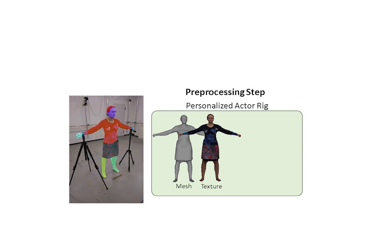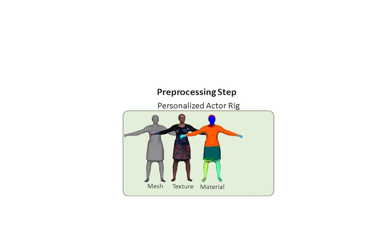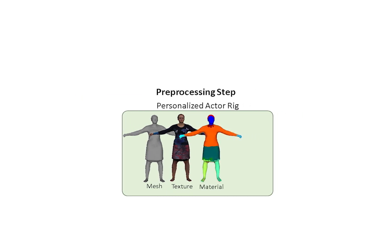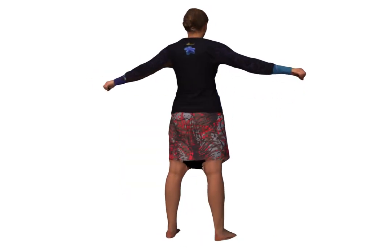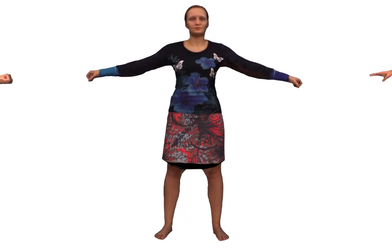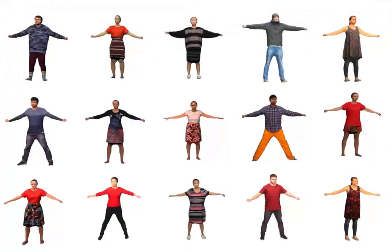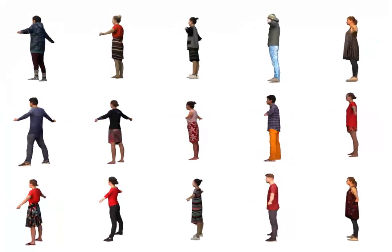The per-vertex labels are then used to automatically adapt the rigidity regularizer weights during the non-rigid tracking. Finally, we rig the model with a kinematic skeleton. Here we show all of our template models from our dataset, which will be made publicly available.